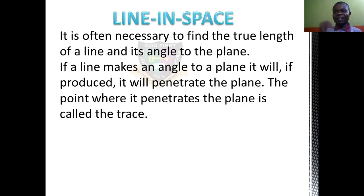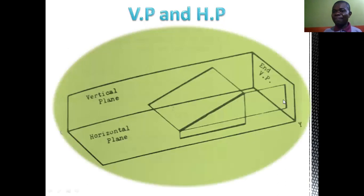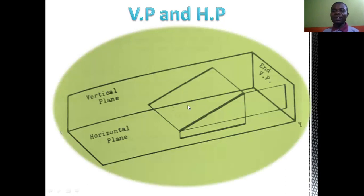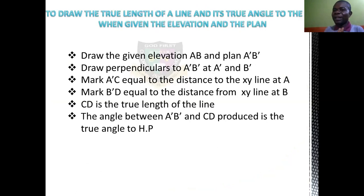I will give you one example. This is the vertical plane. This is the horizontal plane. The true length of this object — this particular elevation — is determined down here. The line SY is used to start the drawing in order to get what we want. Let us see one example: to draw the true length of a line and its true angle to the horizontal plane, when given the elevation and the plan.